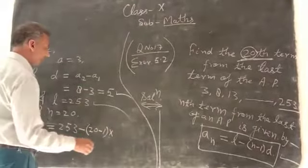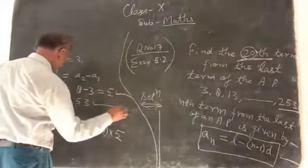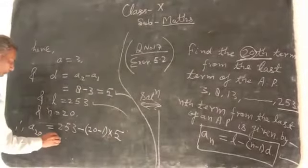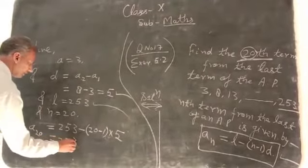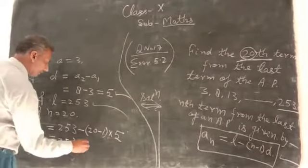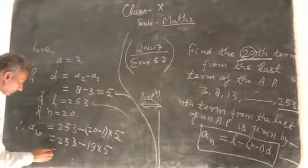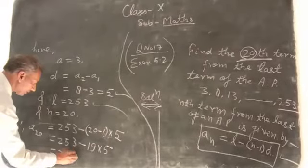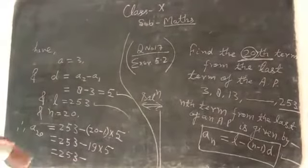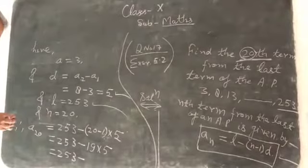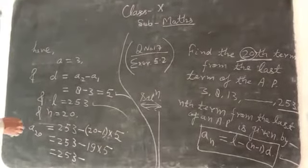D is 5, so 253 minus, 20 minus 1 is 19, times 5. So that will come 253 minus 95.